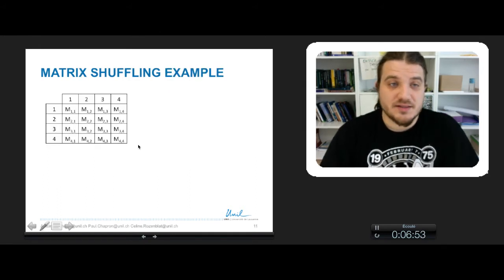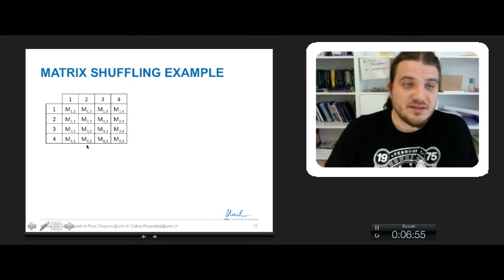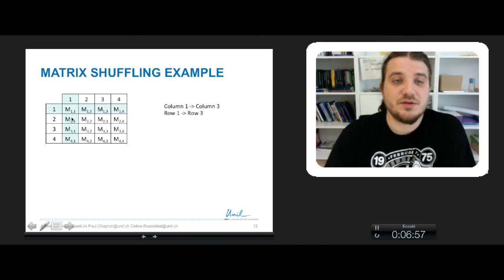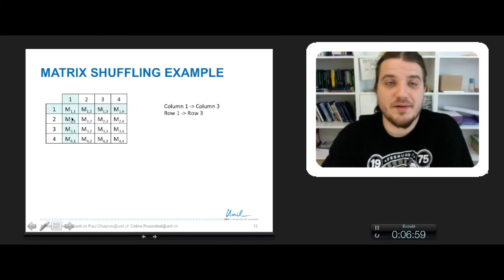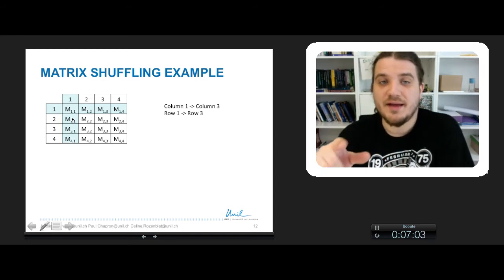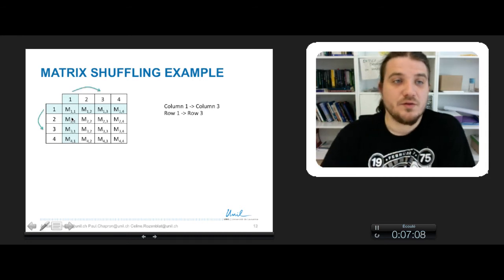Shuffling a matrix is quite simple. Let's say we have this matrix, and we want to permute column 1 to column 3, and row in the same way, so row 1 will become row 3.